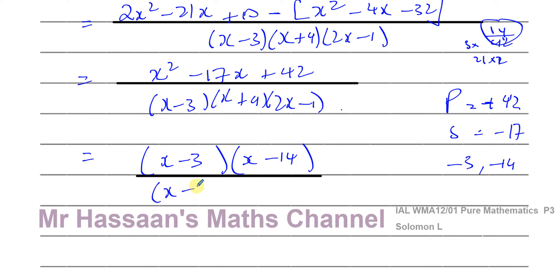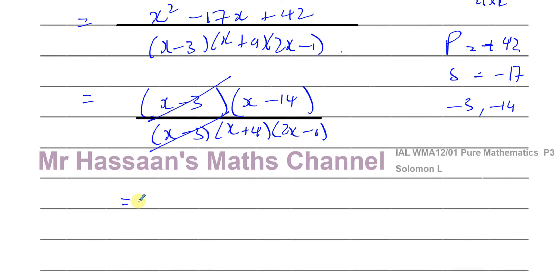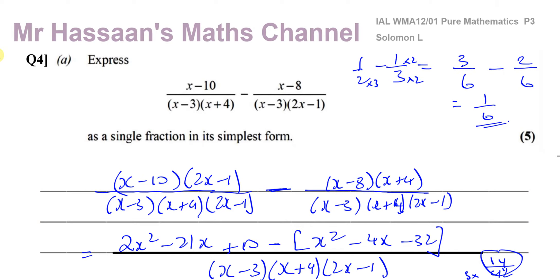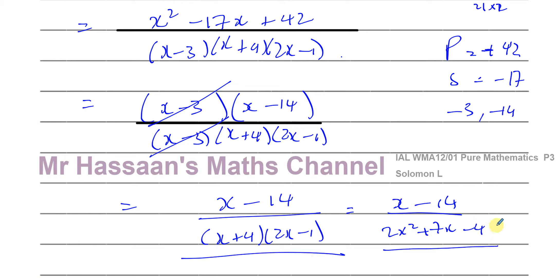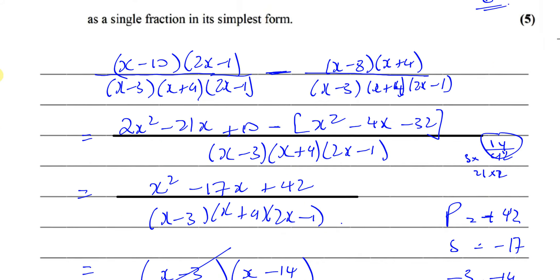Underneath we have x minus 3 times x plus 4 times 2x minus 1. The x minus 3 factors cancel out, so we're left with x minus 14 over x plus 4 times 2x minus 1. That is the answer. You can leave it in factorized form, or if you prefer, expand the denominator to get 2x squared plus 7x minus 4, giving x minus 14 over 2x squared plus 7x minus 4. Always keep it factorized until the last step so common factors can cancel.